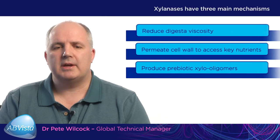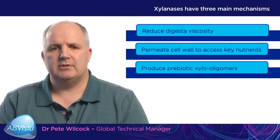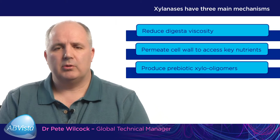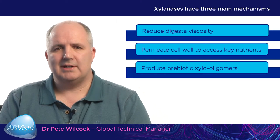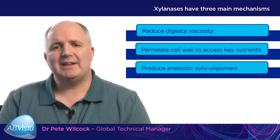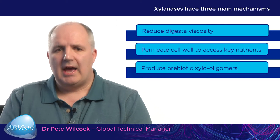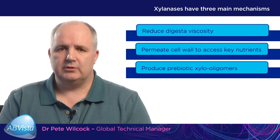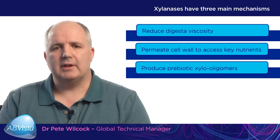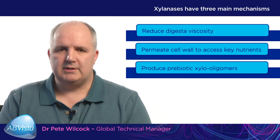Xylanases have three main mechanisms. The first mechanism is the ability of the xylanase to reduce digestive viscosity. A soluble arabinoxylan will increase digestive viscosity, which impedes nutrient utilization by the animal. If we add xylanase, we break down the long-chain arabinoxylans and therefore reduce the digestive viscosity, improving nutrient utilization especially related to fat, and specifically saturated fats.